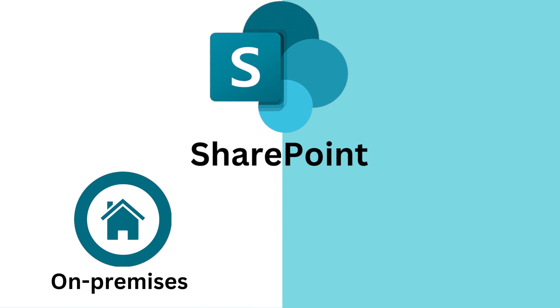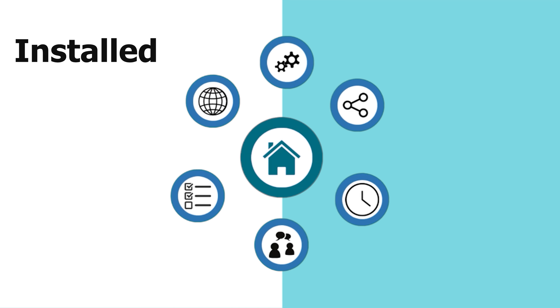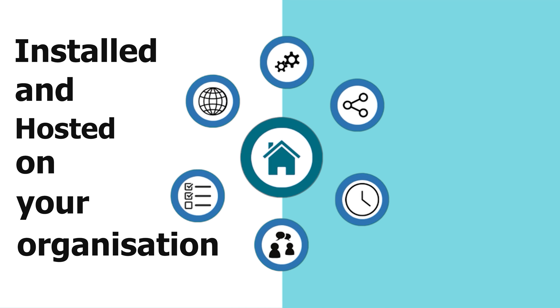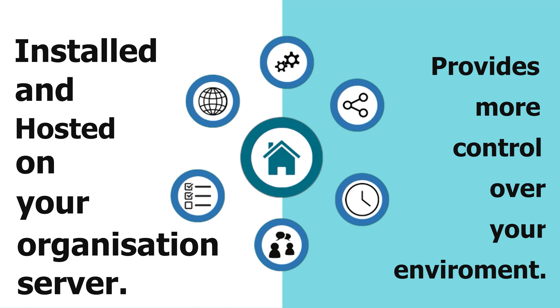SharePoint basically comes in two versions: SharePoint On-Premises and SharePoint Online. SharePoint On-Premises is installed and hosted on your organization's server. Because a lot of companies are hesitant to share their information online, this version provides more control over the environment, as it is installed locally in your system. This on-premises version gives you more control over your environment since it runs within your organization's own resources.